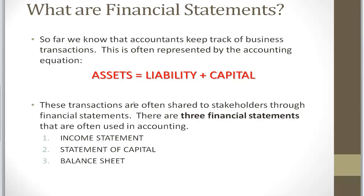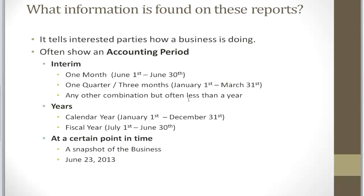We have the income statement, the statement of capital, and the balance sheet. What type of information can be found on these reports? These reports show stakeholders — whether it's a client, a manager, or a government agency — how the business is doing. And these things are often shown in an accounting period.